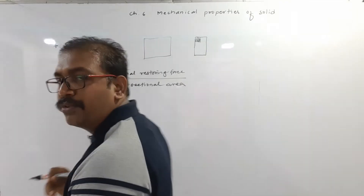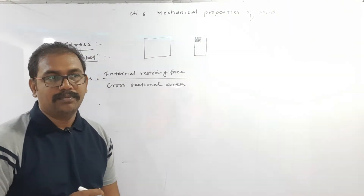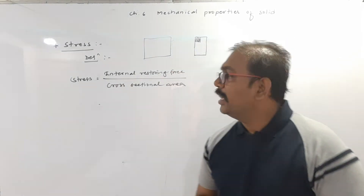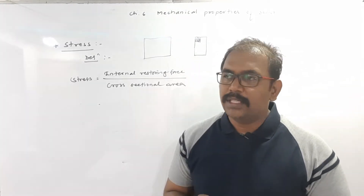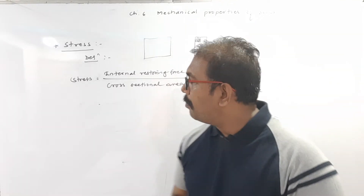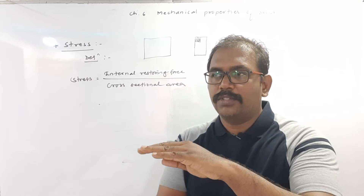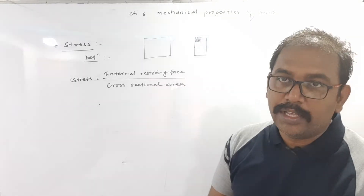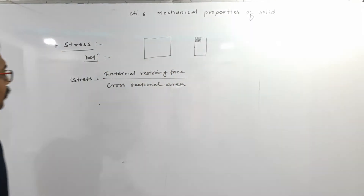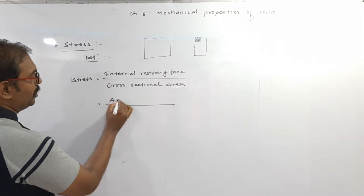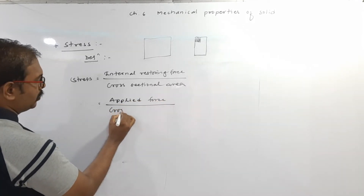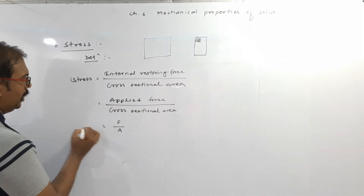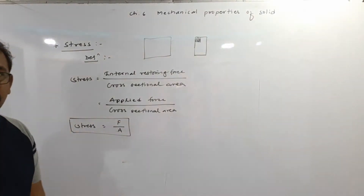The internal restoring force developed in a body is nearly equal to the applied force. If we apply a smaller force to a spring and release it, it moves slowly; if we apply a larger force, it moves faster — meaning larger applied force produces larger internal restoring force. So instead of internal restoring force we can write applied force F, and the cross-sectional area A. The formula of stress is F by A.